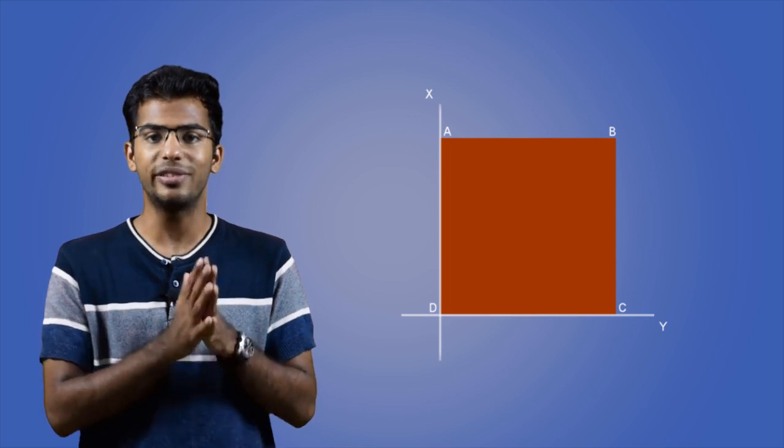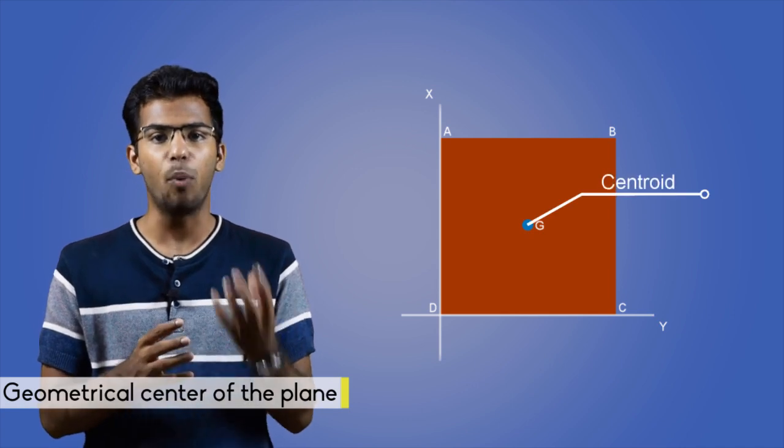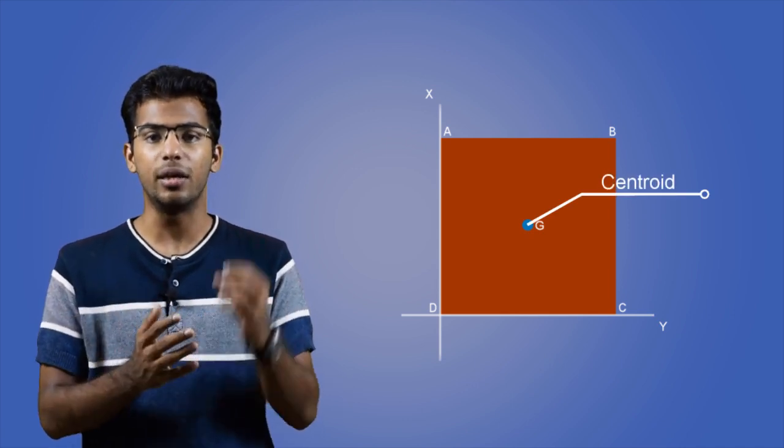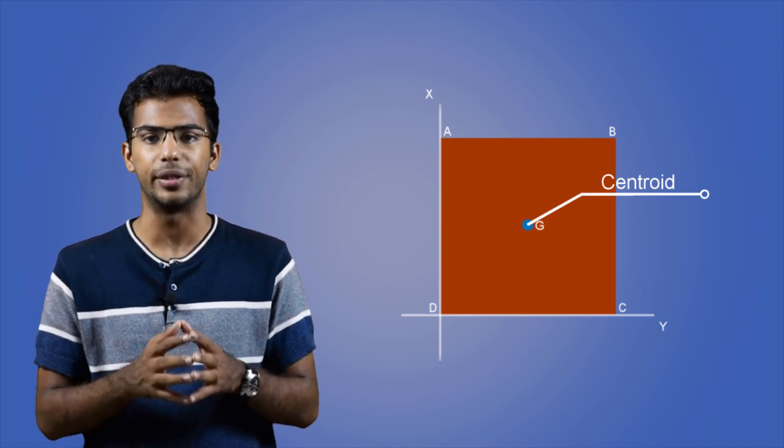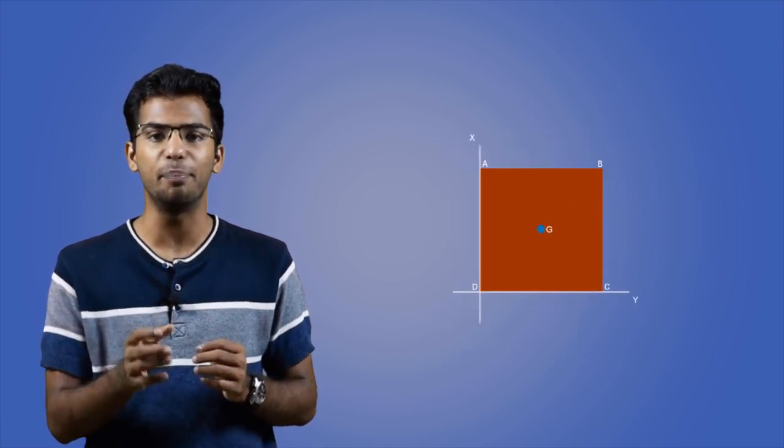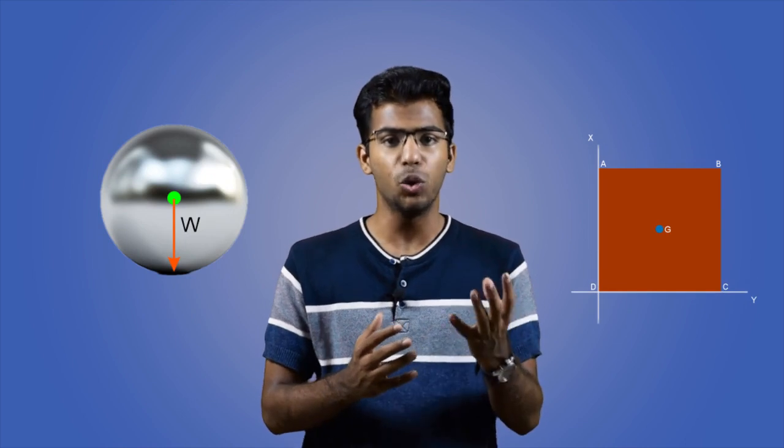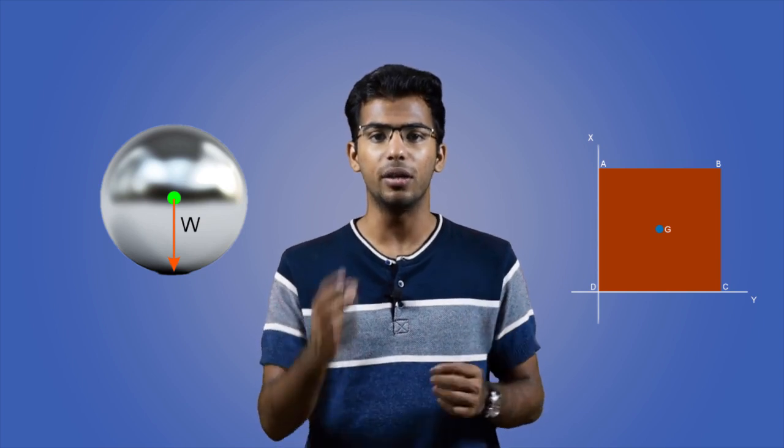So centroid is the geometrical center of the plane. It is the point where the whole area is assumed to be concentrated. The difference is so minimal yet very important. Centroid is the point where the area is concentrated, and COG, that is center of gravity, is the point where the whole weight of the body is concentrated.